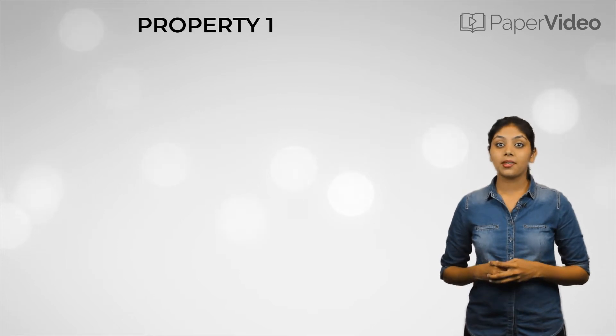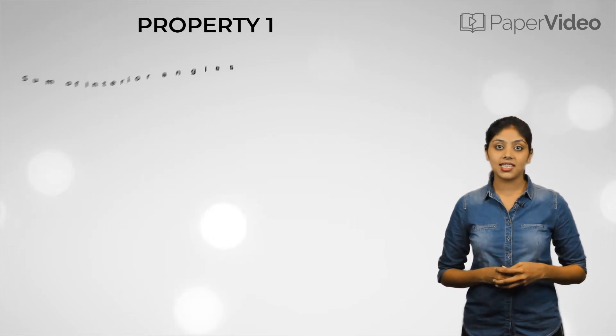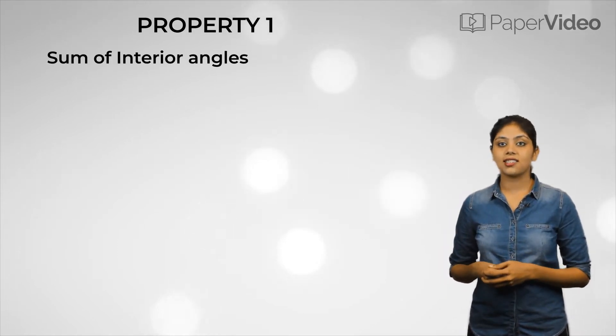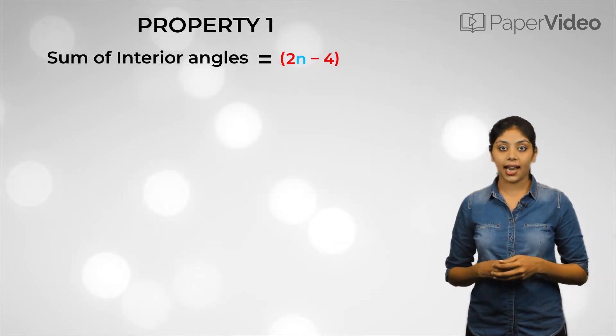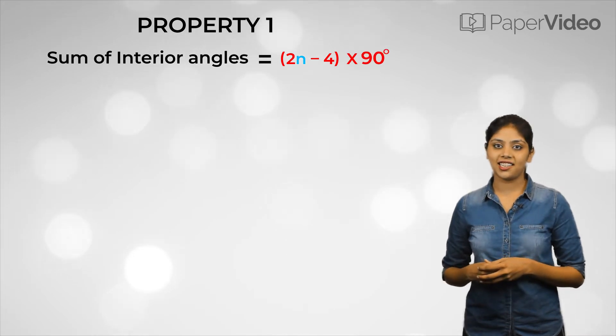According to the first property, in a polygon of n sides, the sum of the interior angles is equal to 2n-4 right angles, that is 2n-4 into 90 degrees.